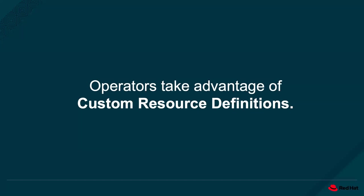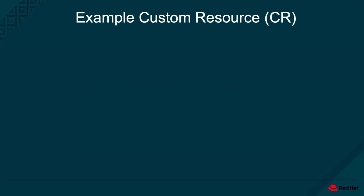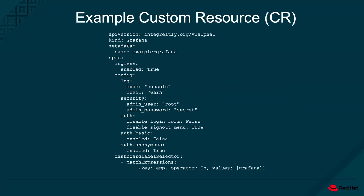One of the requirements of an operator is that it takes advantage of custom resource definitions — a very powerful feature in Kubernetes. CRDs allow us to extend the Kubernetes API. For example, here is a kind Grafana — Grafana is used to visualize metric data, typically for monitoring. This is not something you get out of the box with Kubernetes, but someone built a custom resource called Grafana that lets you put in all the details for your Grafana application. This is a complete customization that becomes a resource on the API without even needing to recompile the API source code.